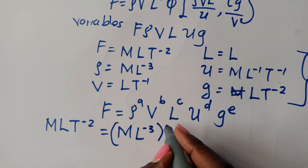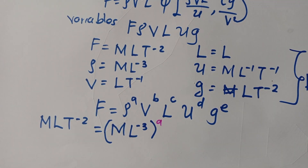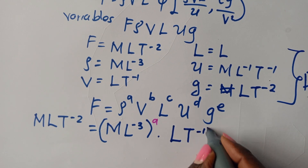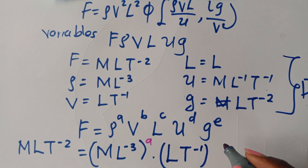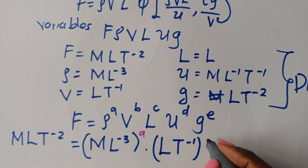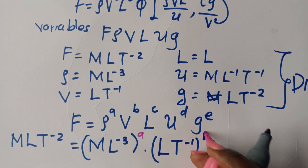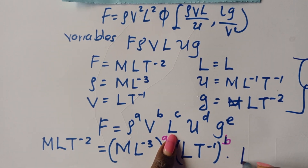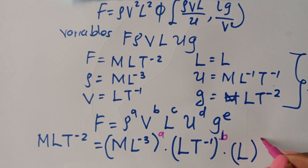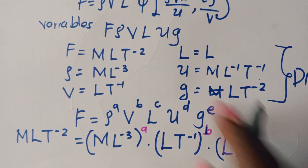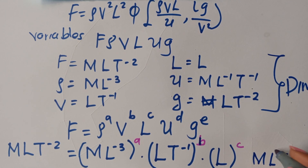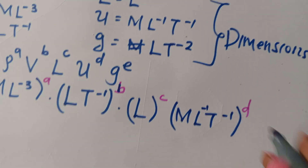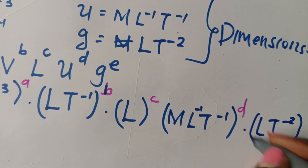Next, V has dimensions L T⁻¹ raised to B. Then L is in brackets raised to C. Mu has dimensions M L⁻¹ T⁻¹ raised to D. The last variable G has dimensions L T⁻² raised to E.